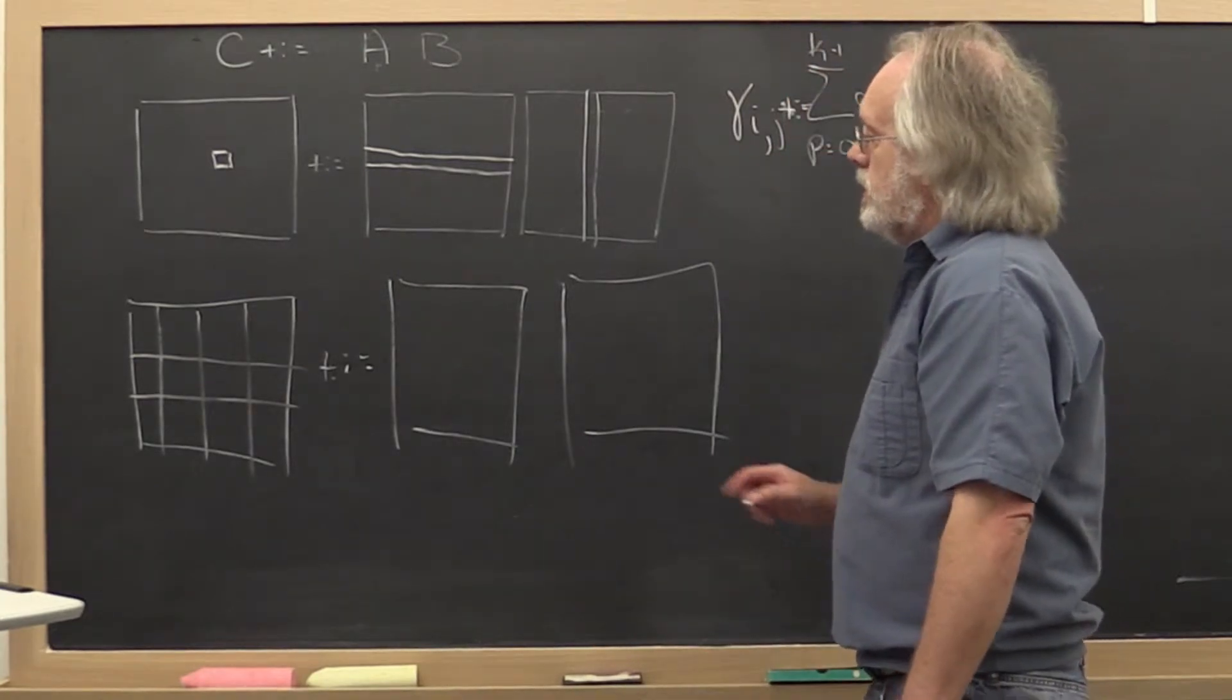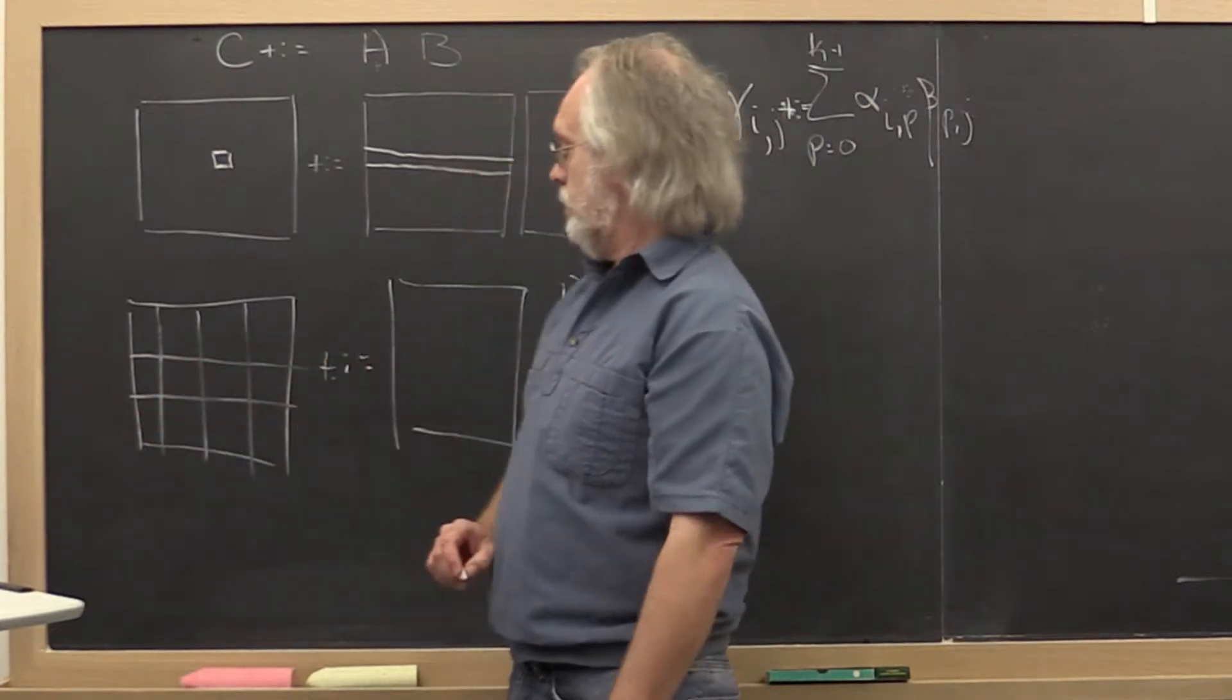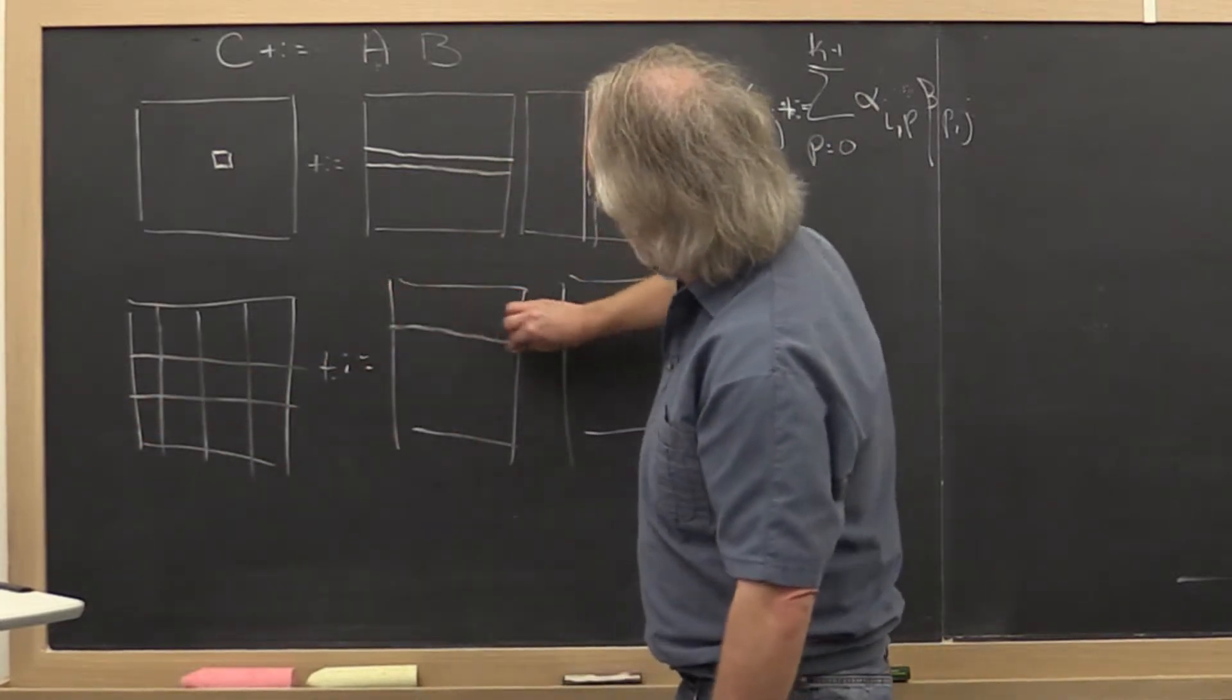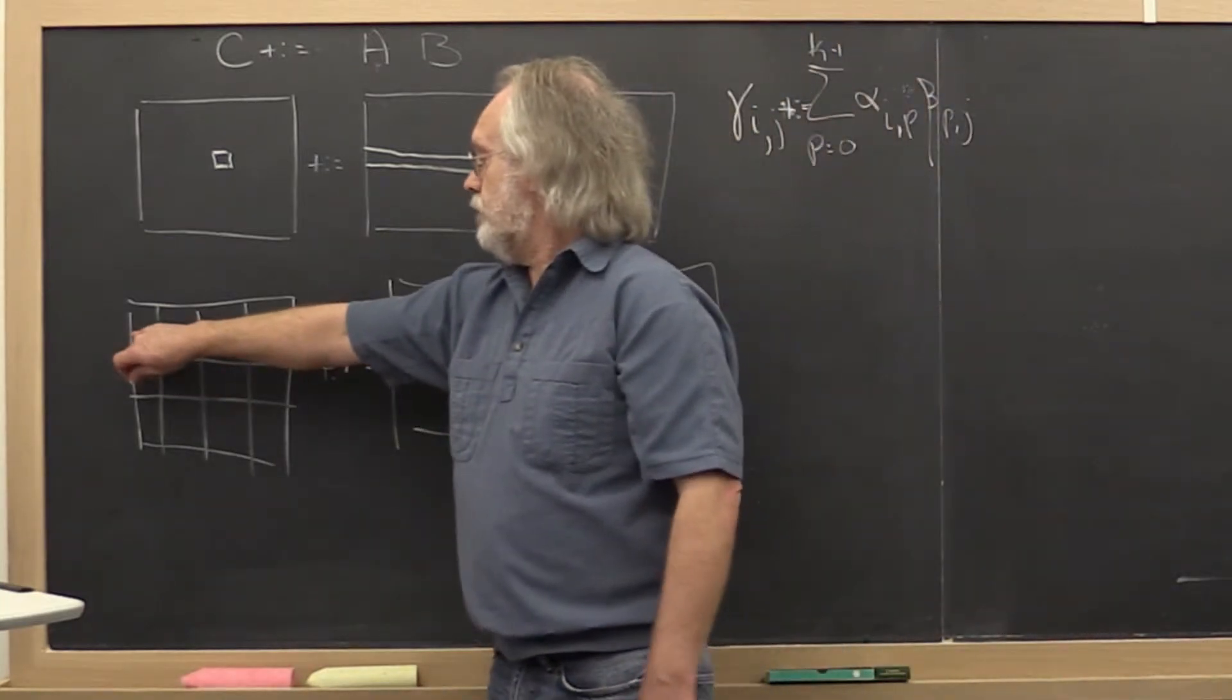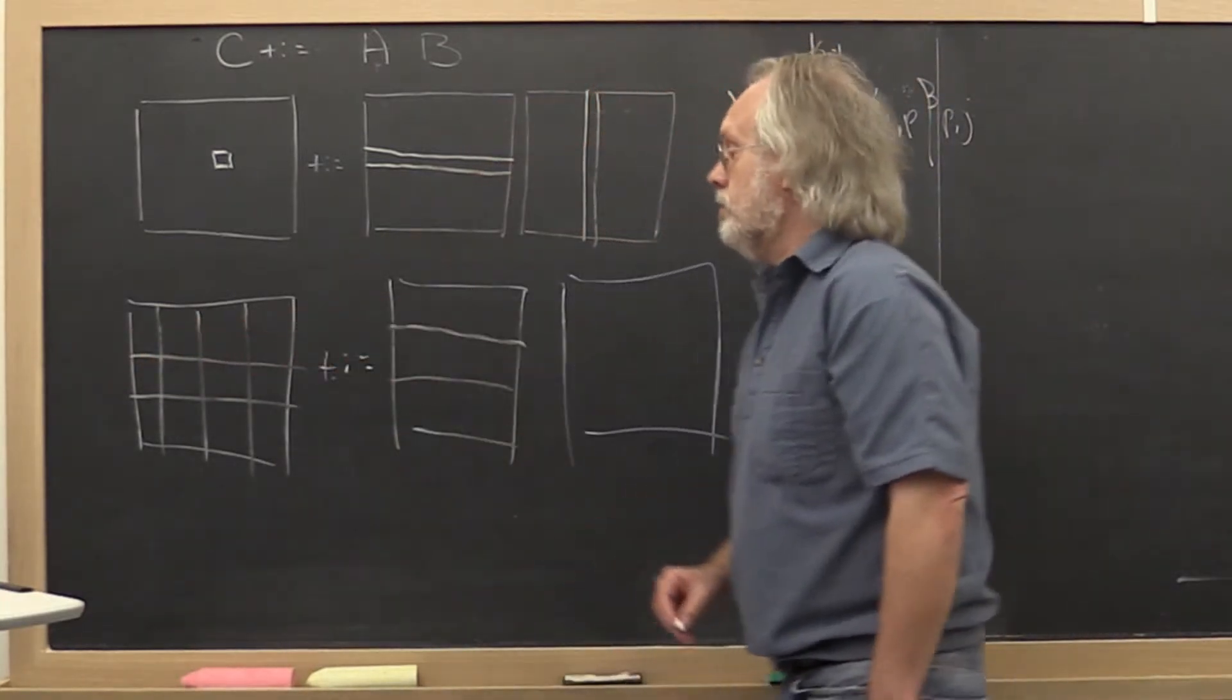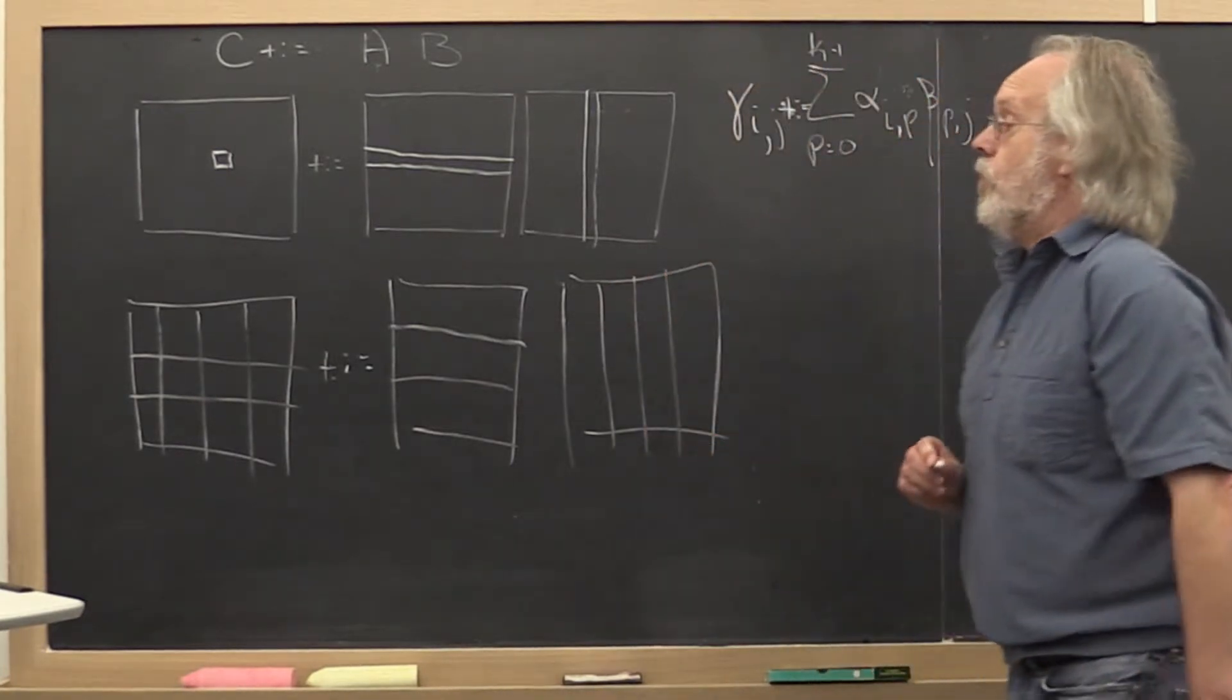Now turns out that if we partition it into three blocks in the row direction, then we have to do the same thing for our matrix A. And if we partition it into four blocks in the column direction, then we have to do the same thing for matrix B.